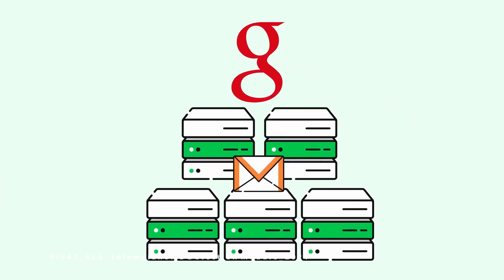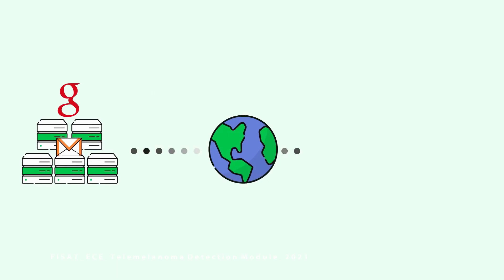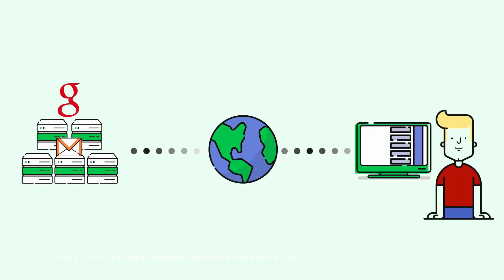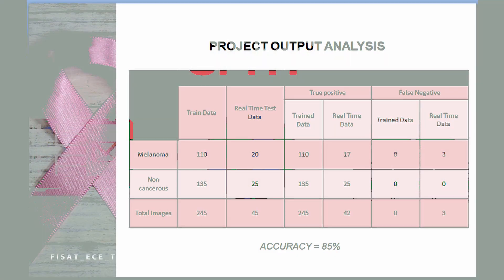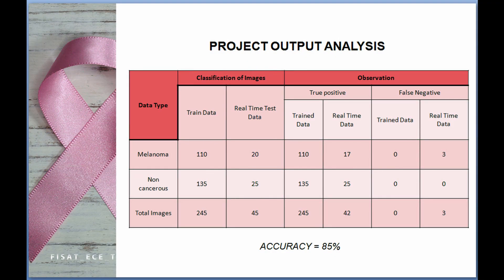Simple Mail Transfer Protocol (SMTP) is a set of communication guidelines that allow software to transmit electronic mail over the internet. This is the project output analysis.